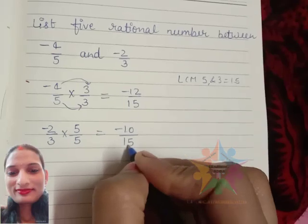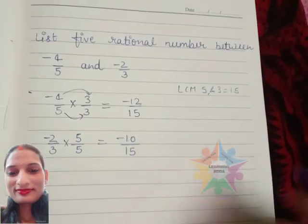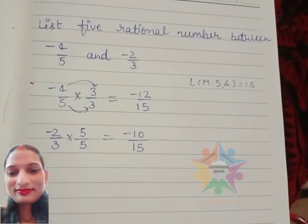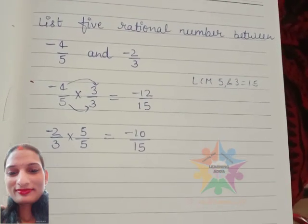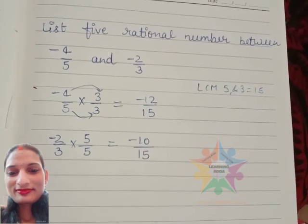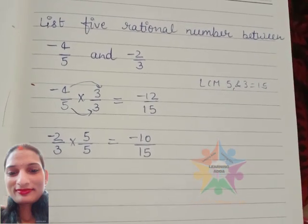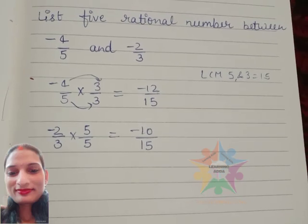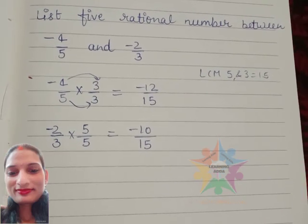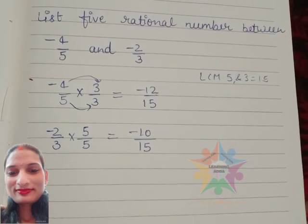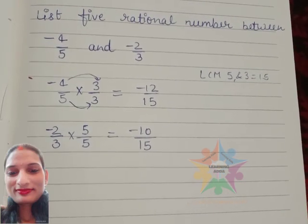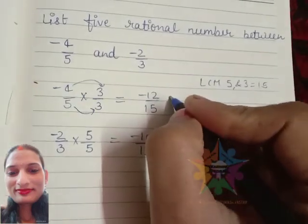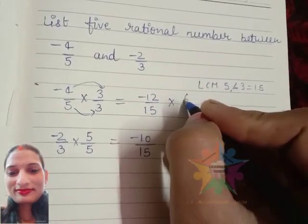If we need to find 5 rational numbers, we multiply both rational numbers by 6, because between -10 and -12 we get only one rational number, -11. So we multiply numerator and denominator by 6.